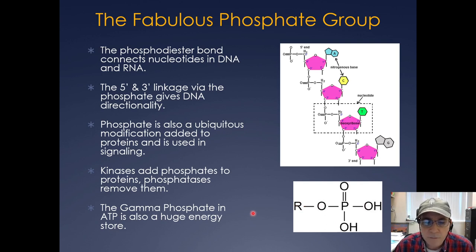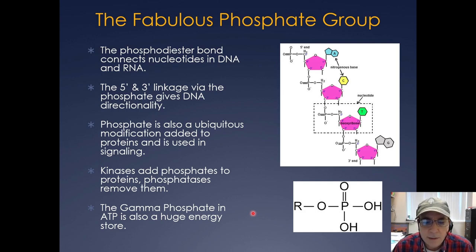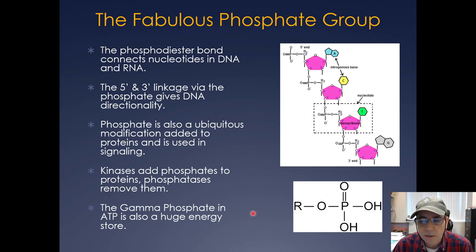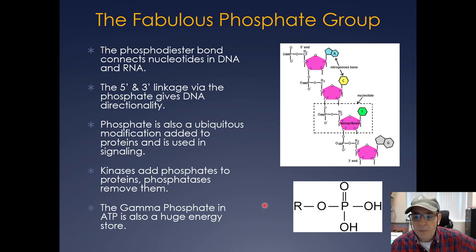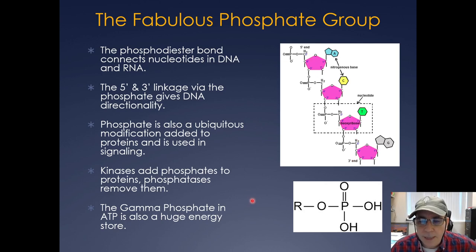Another place where phosphate is used is in ATP. The gamma phosphate in ATP is a huge energy store, and you can also have pyrophosphate released when you're synthesizing RNA or DNA.